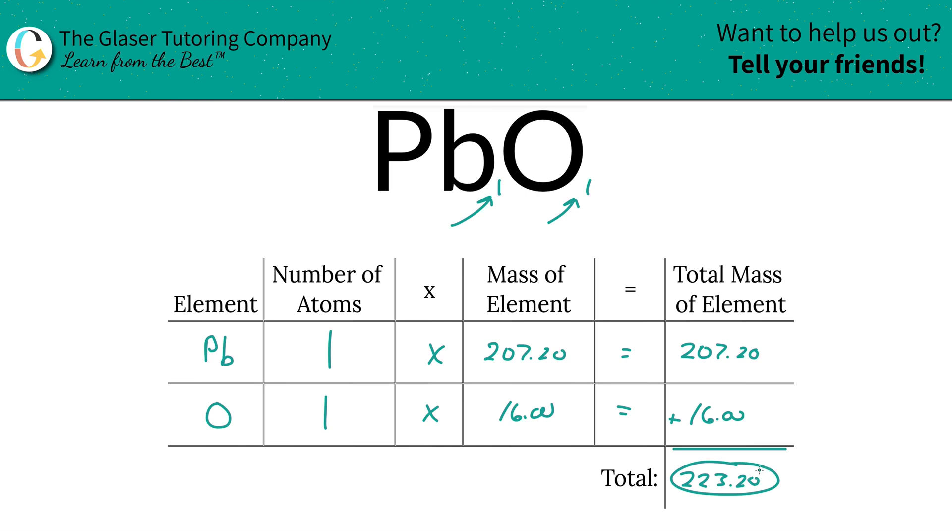That's the first step of the process. Now that we know the total mass of the compound, I'm going to add a column to the table and we can calculate those percentages very easily. Watch.